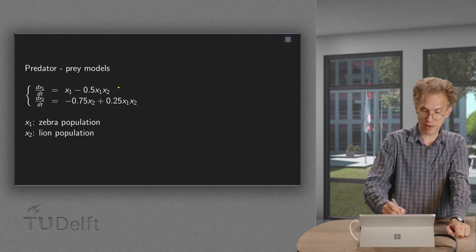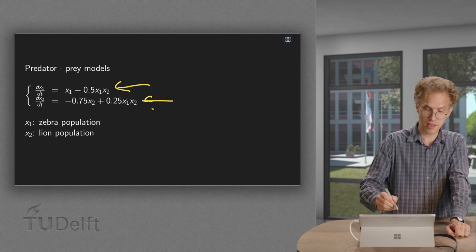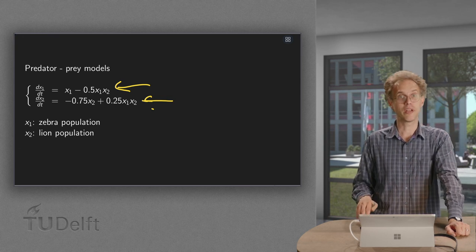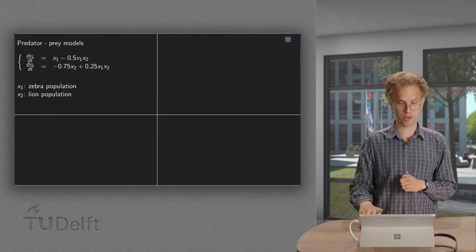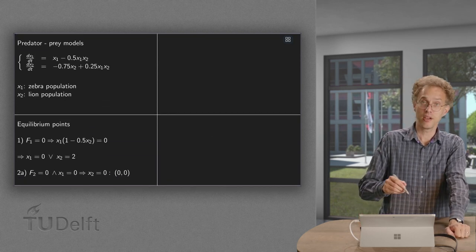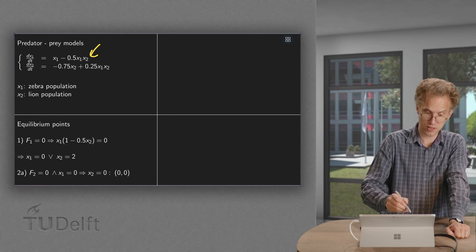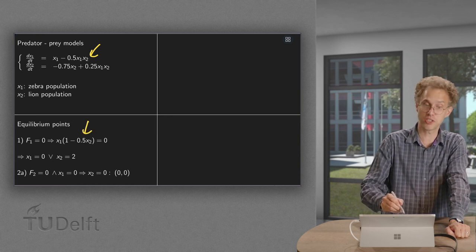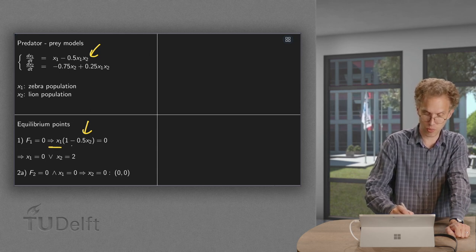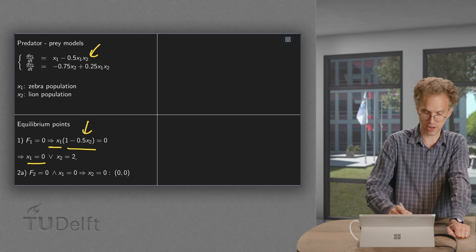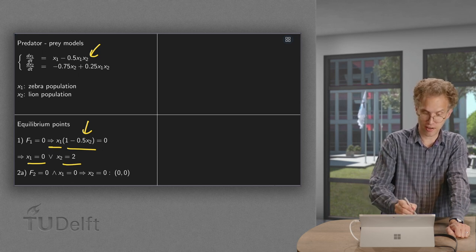So here we had our problem for the zebra population and the lion population. Let's see what happens. First of all, we are going to compute the equilibrium points. For the equilibrium points, we first set f1 to 0, gives us x1 times 1 minus 0.5 x2 equals 0. So two solutions: either x1 is 0 or x2 is 2.